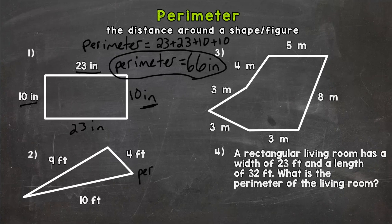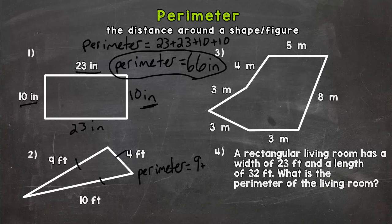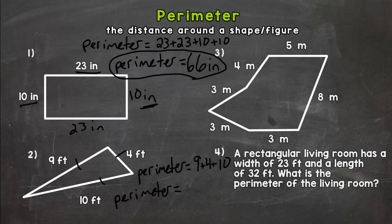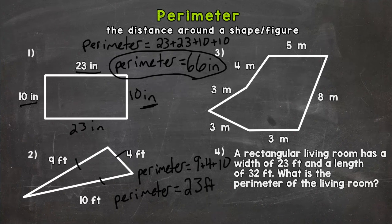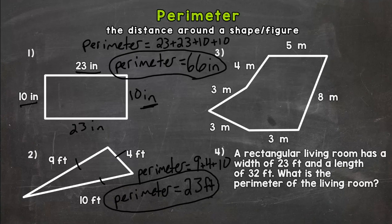Let's take a look at number two. We have a triangle. So perimeter is going to equal the sum of all the sides and we have three sides. So we need a 9 plus a 4 plus a 10. So let's add those up. 9 plus 4 is 13 plus 10 we get 23 and we need a unit of measure which is feet. So the perimeter or distance around that triangle is 23 feet.